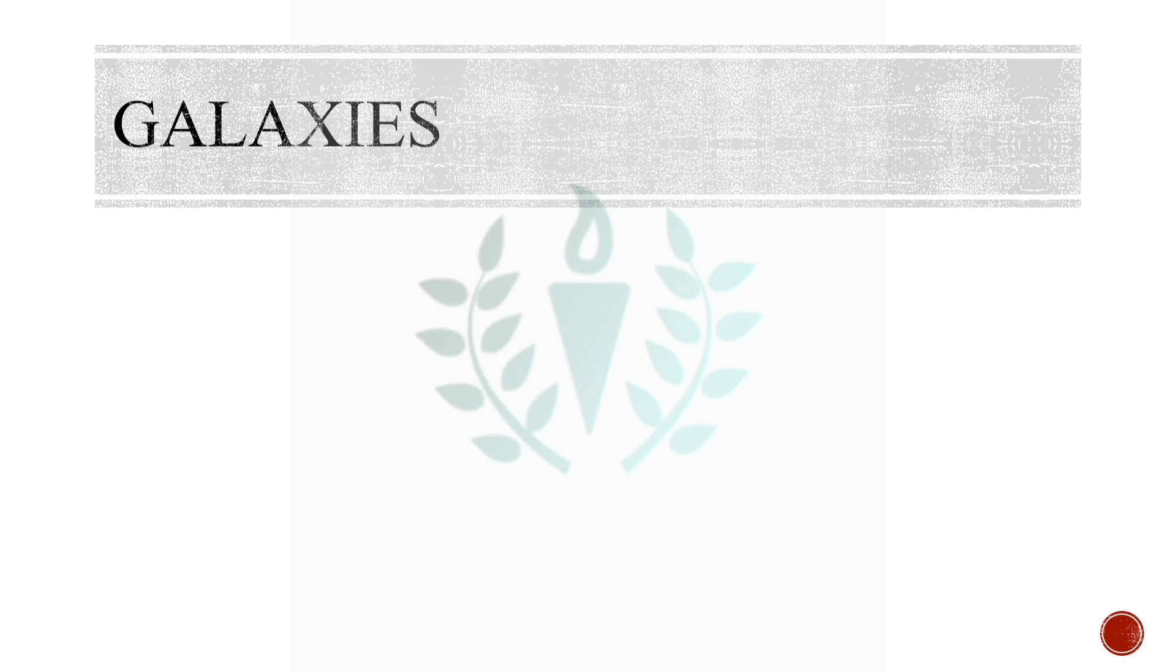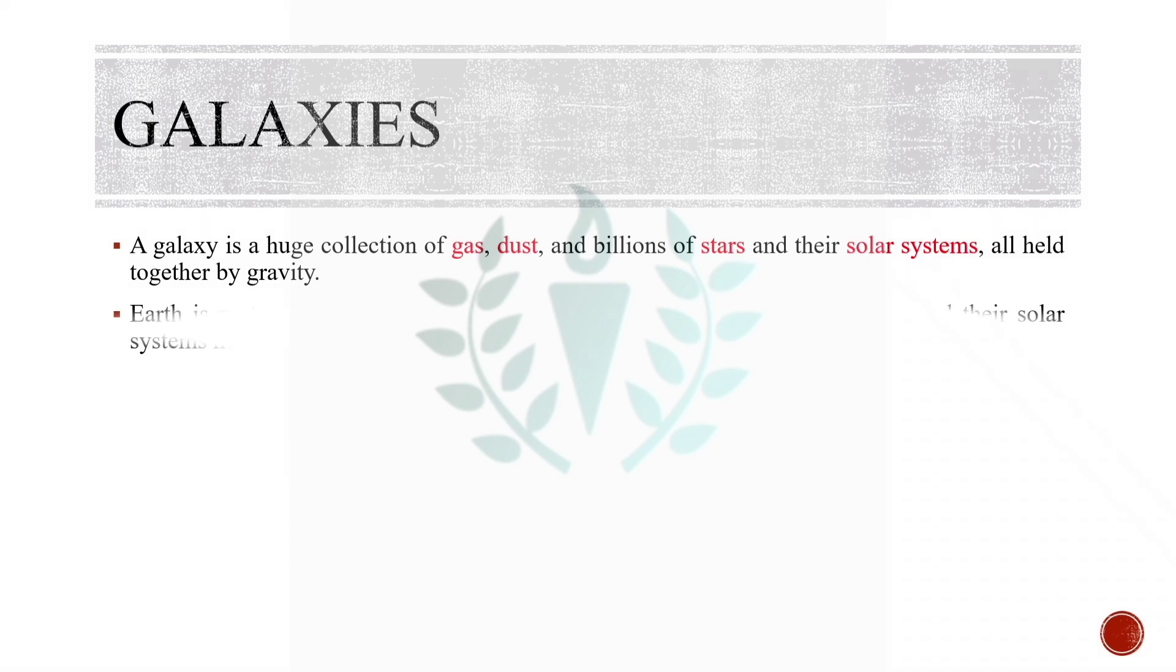Now we all know that our universe is made up of galaxies, some of which are Milky Way Galaxy, Andromeda Galaxy, Messier 87, Pinwheel Galaxy, OGS Object, Whirlpool Galaxy, Sombrero Galaxy, and Centaurus A. But what are these galaxies actually? A galaxy is a huge collection of gas, dust, and billions of stars and their solar systems, all held together by gravity.